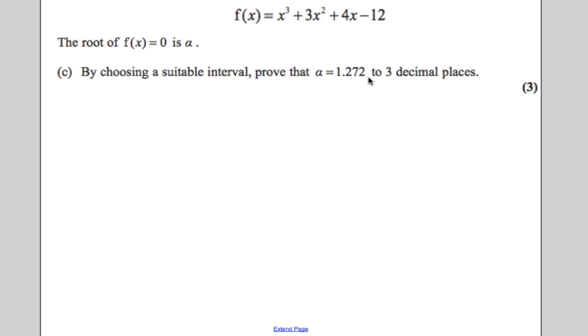And lastly, it says choose a suitable interval to prove that alpha is 1.272 is the root correct to 3DP. So you are dealing with alpha is 1.272. What you are going to do, you are going to use its upper bound. You are going to add on 0.0005 and you are going to check 1.2725.